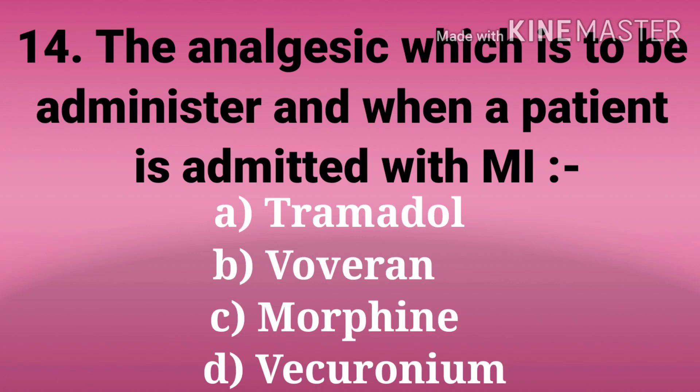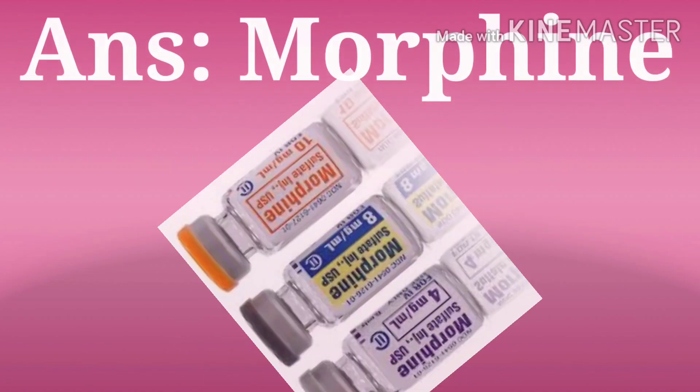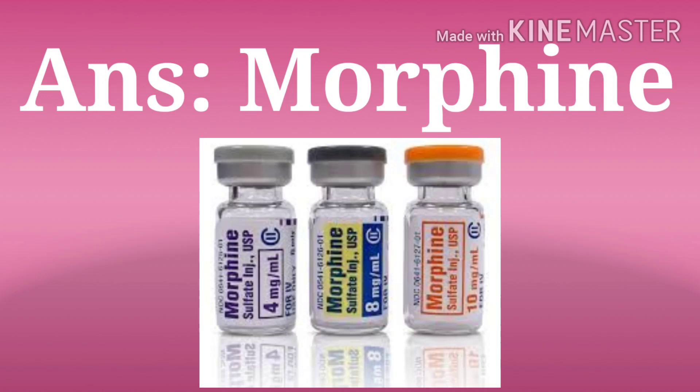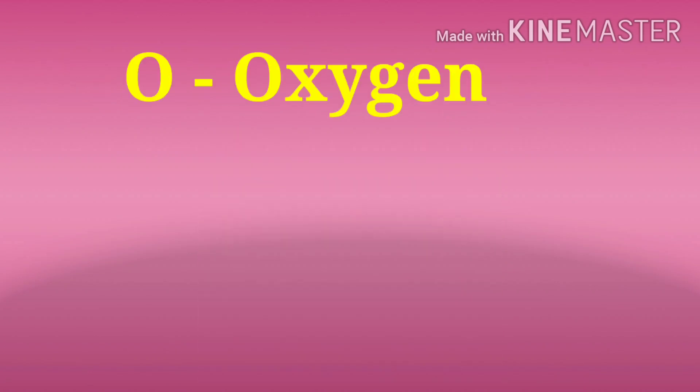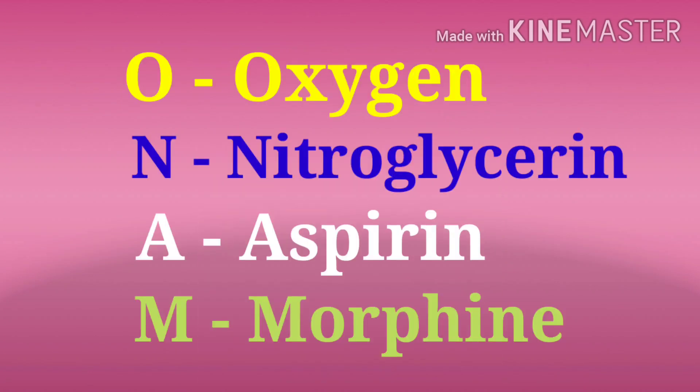The next question: the analgesic which is to be administered when a patient is admitted with MI. The options are tramadol, voveran, morphine, and vecuronium. The answer is morphine.